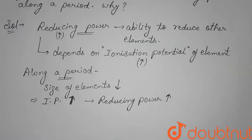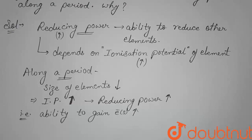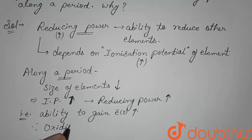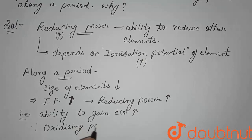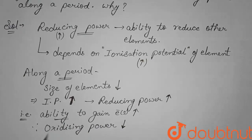Oxidizing power means the ability to oxidize others and reduce oneself — that means gaining electrons. As we go along the period, size decreases, so the ability to gain electrons increases. Therefore, oxidizing power increases along the period. This is the reason: as ability to gain electrons increases along the period, oxidizing power increases. So this is the answer. Thank you.